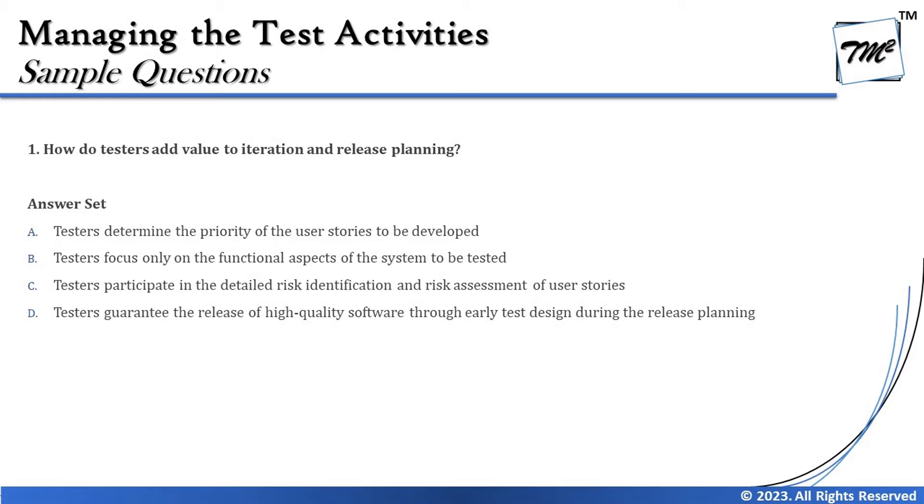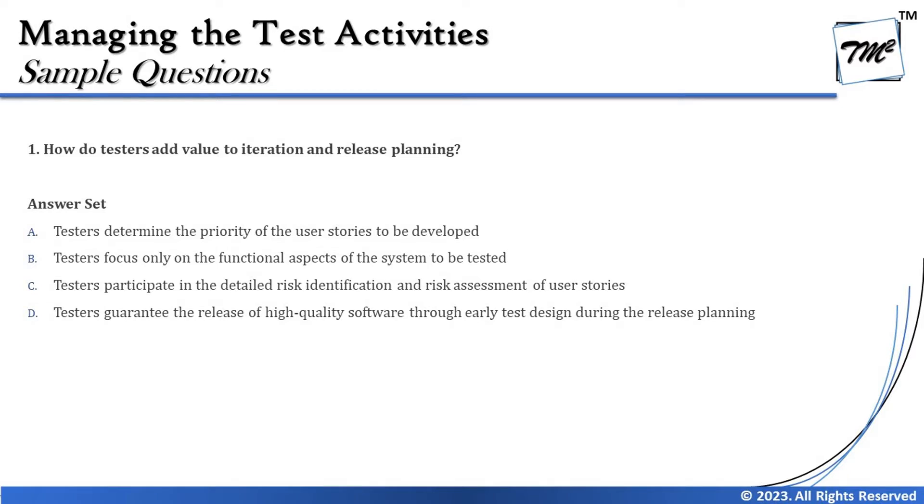Option C says testers participate in detailed risk identification and risk assessment of user stories. That's something very appropriate and straightforward from what we learned in the topic. Risk identification and assessment is a step that happens at both release planning and iteration planning. Testers have a great contribution in identifying the risks they need to mitigate in terms of testing. This looks correct so far — let's cross-check with D.